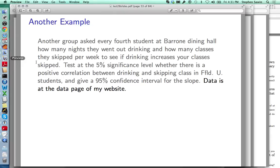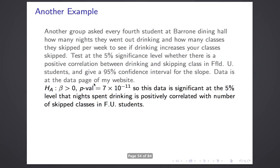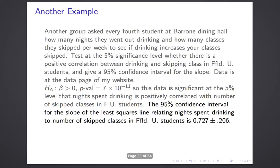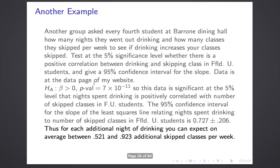With a p-value of 7.2 times 10 to the negative 11th, this data is significant at the 5% level that nights spent drinking is positively correlated with number of skipped classes in Fairfield University students. The 95% confidence interval for the slope of the least squares line relating nights spent drinking to number of skipped classes is 0.727 plus or minus 0.206. This was a much stronger association, and the confidence interval is a bit narrower — going from about 0.5 to about 0.9 — but still not all that narrow. For each additional night of drinking, you can expect on average to skip an additional 0.5 to 0.9 classes per week.